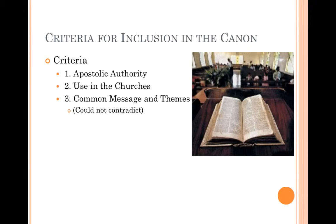Why don't we have the Gospel of Thomas or the Gospel of Peter? What was recognized early on is that these writings would take the name of an apostle and connect it to a community. For example, the Gospel of Thomas is from a group we call the Gnostics, and if you read through it you see those Gnostic characteristics. So that Gospel was not accepted as authoritative. There were criteria for including books in the canon, which was finalized at the end of the fourth century.